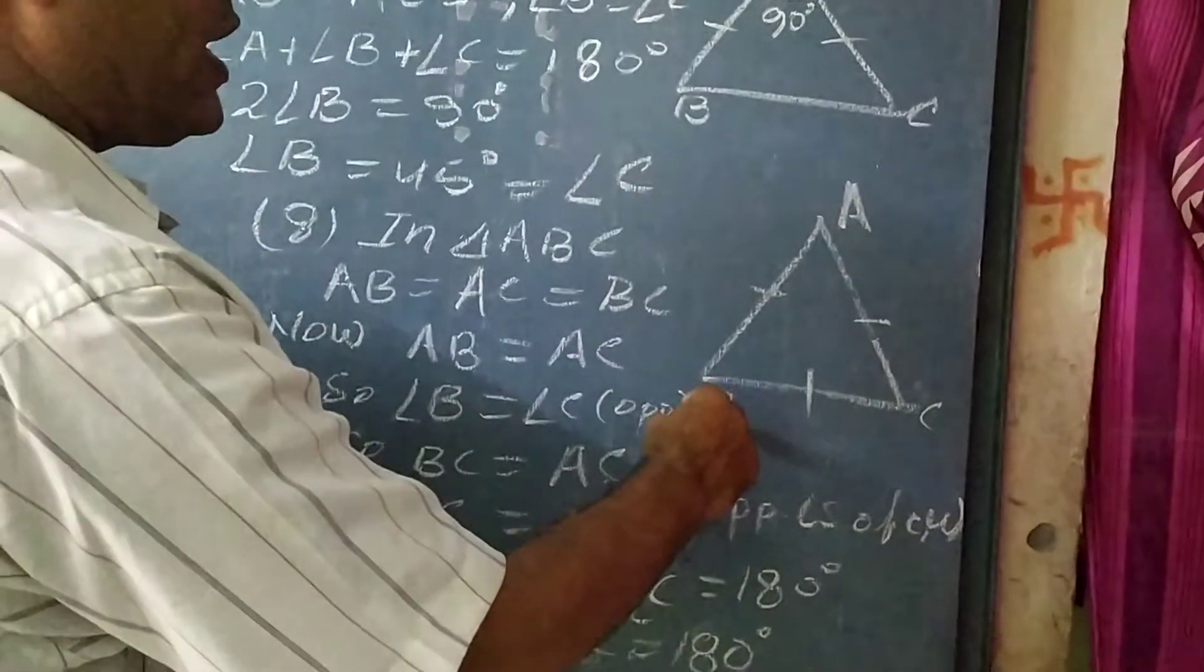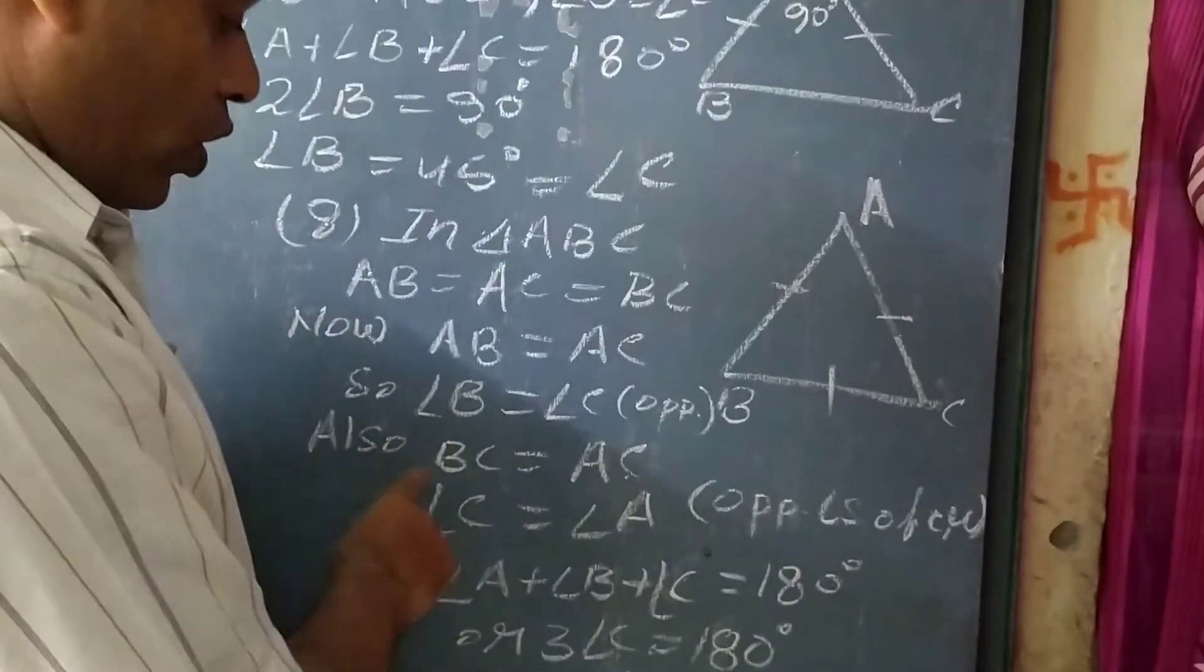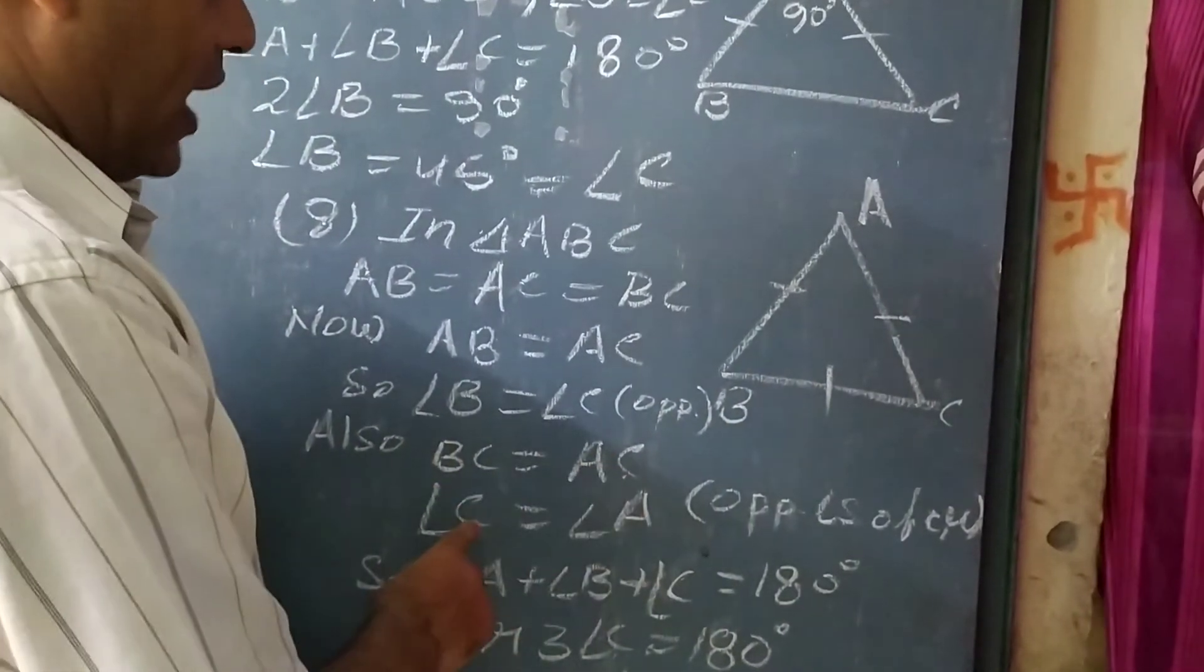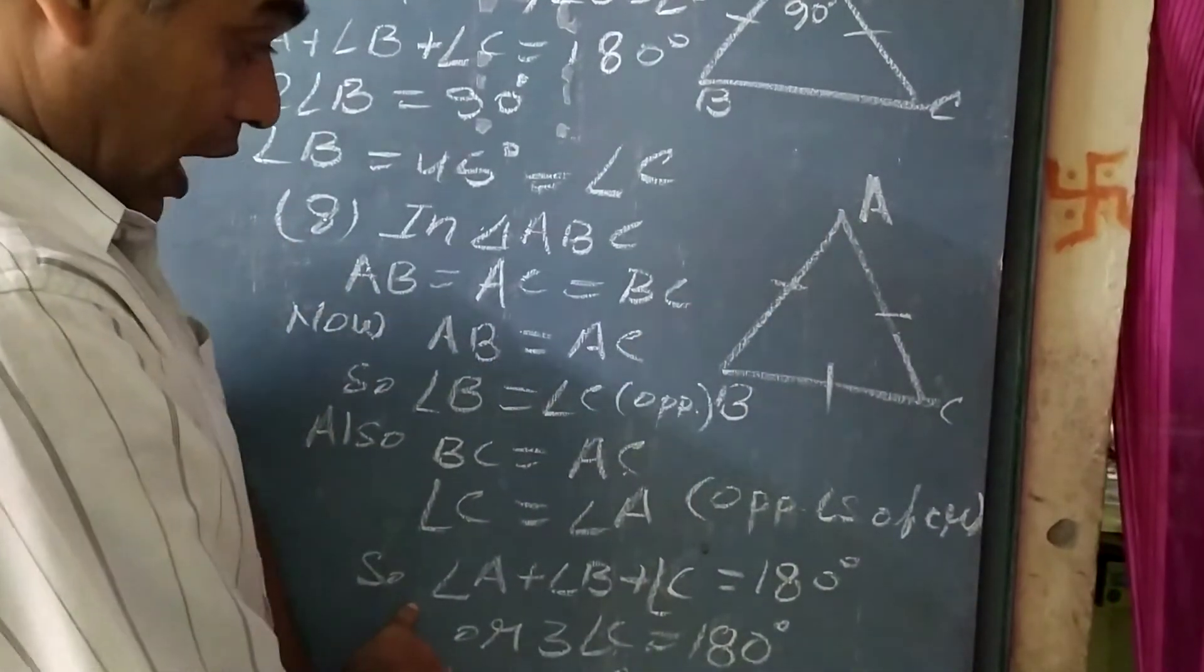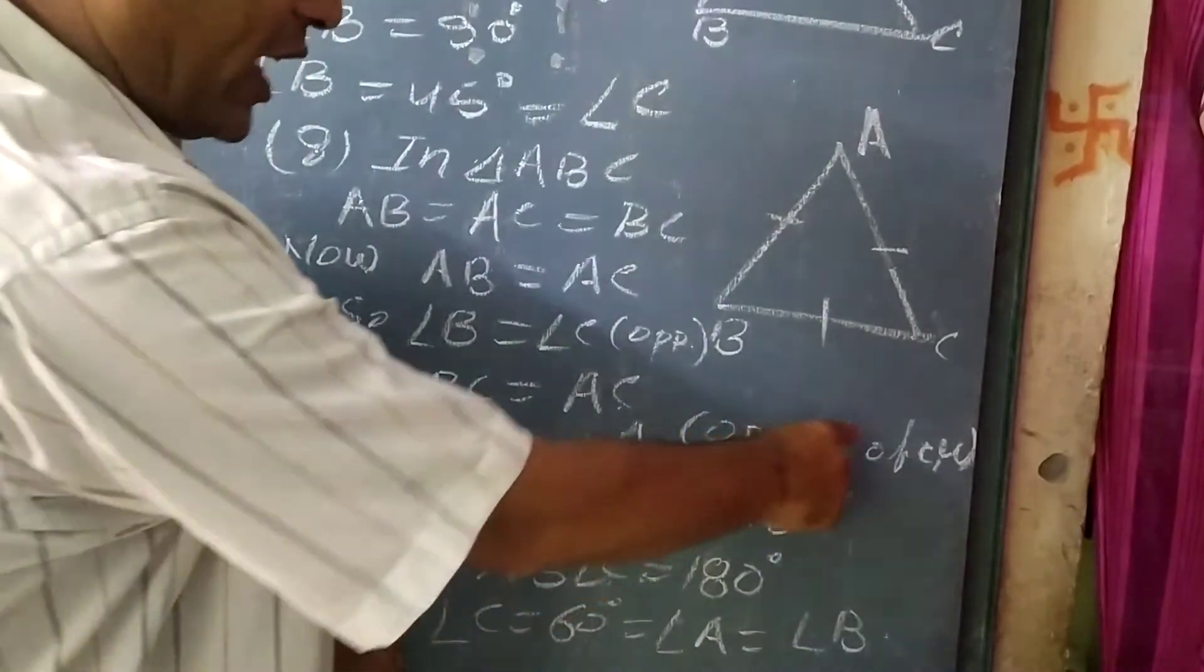AB equal to AC, that is angle B equal to angle C. Now also BC equal to AC, so angle C equal to angle A. So we can write, as opposite angles of equal sides.